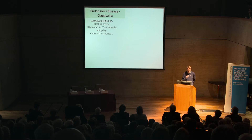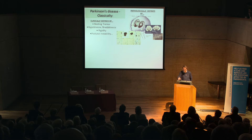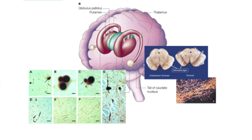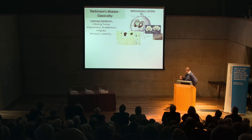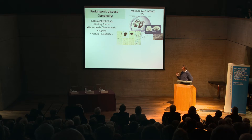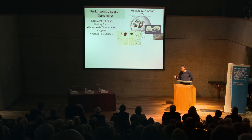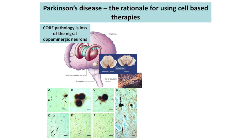Parkinson's disease is classically defined by problems of movement. It's defined pathologically by the loss of a very small subset of nerve cells in the substantia nigra, at the top of the brain stem. Within the substantia nigra you have half a million dopamine cells on either side, and when you've lost half of that — a quarter of a million — you develop the features of Parkinson's disease. That's a pretty small population given you've got something like 70 to 80 billion nerve cells in your brain.